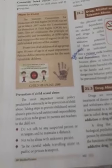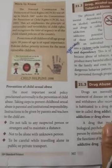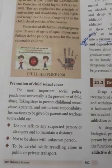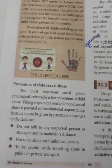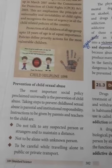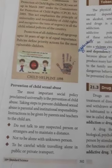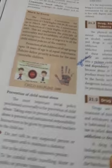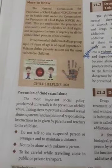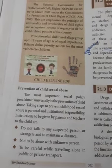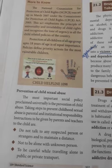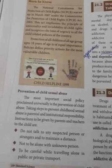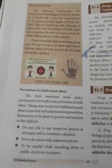There are five points. The first point: do not talk to any suspected person or strangers, and maintain a distance. Strangers means unknown persons — do not talk to them and keep your distance. The second point: do not be alone with an unknown person for a long period of time, as they may take advantage.